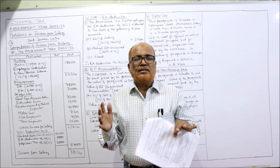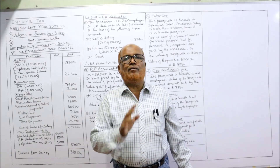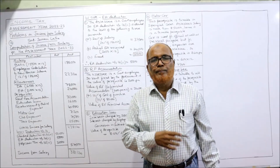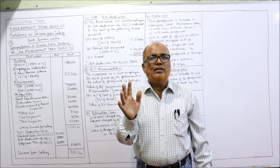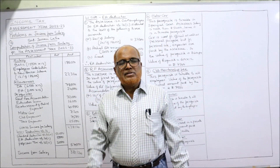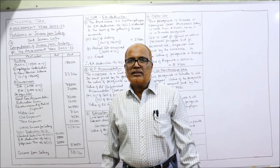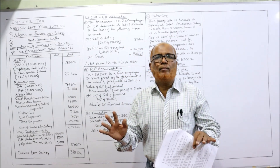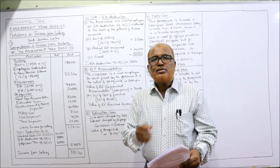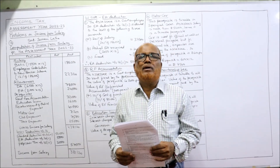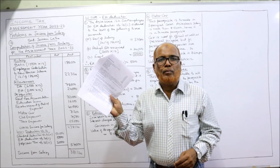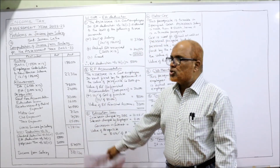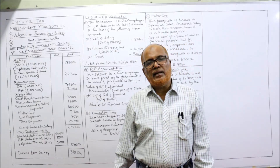After that, in the next video we'll start the next head — income from house property. Out of the 5 heads, the biggest head is income from salary; more provisions are there under income from salary. Before starting the 12th problem, I expect my viewers to have a printout of the problems given in the link under my description. Take a screenshot of the answer of this 12th problem, then I'll explain.